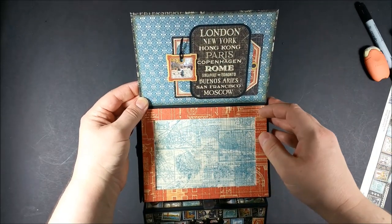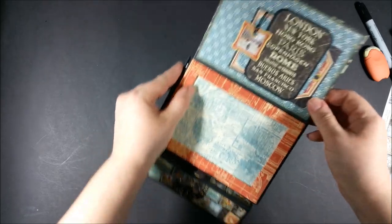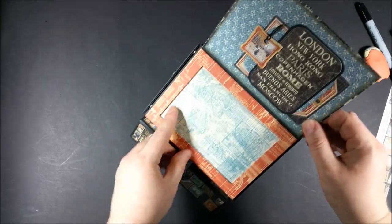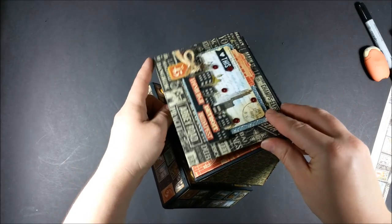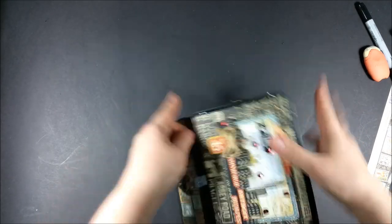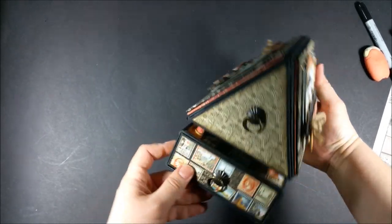On this part of the lid you cannot use bulky embellishments because the thickness of the frame is only one-sixteenth of an inch, so the embellishments should fit inside once the lid is closed.